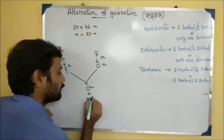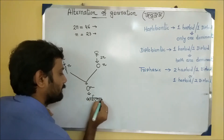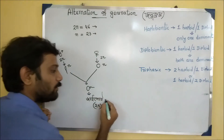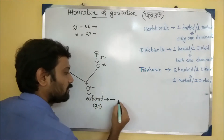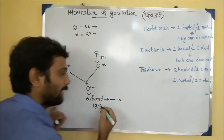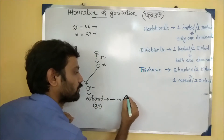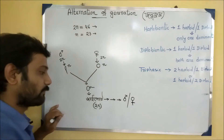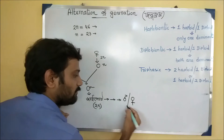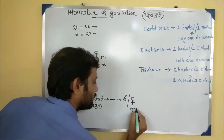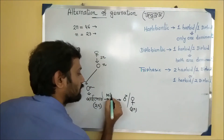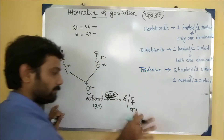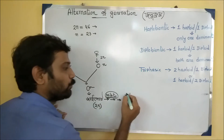Zygote. A zygote therefore undergoes mitosis division ultimately. This is a 2n — there is a division that is called mitotic division, meaning the chromosome number remains the same as 2n.